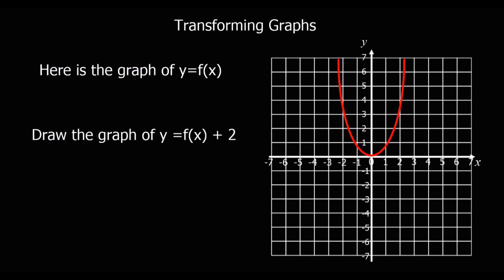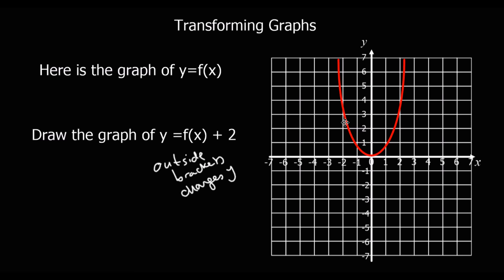Now here's the change outside the bracket. Outside the bracket changes the y-axis — so it's going up and down — and it says plus 2, and you simply plus 2. So we're adding 2 onto the y values. Here's the original graph, and it just lifts up 2 spaces, and there we have y equals f(x) plus 2. Outside the bracket changes the y and does what it's told.